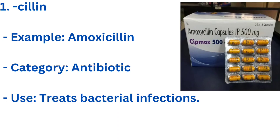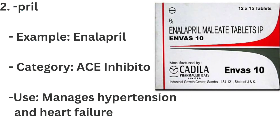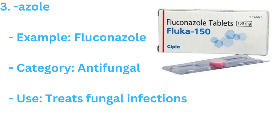1. CELIN — Example: AMOXYCILLIN. Category: ANTIBIOTIC. Use: TREATS BACTERIAL INFECTIONS. 2. PRIL — Example: ENALAPRIL. Category: ACE INHIBITOR. Use: MANAGES HYPERTENSION AND HEART FAILURE.